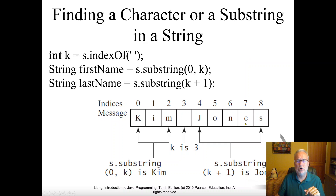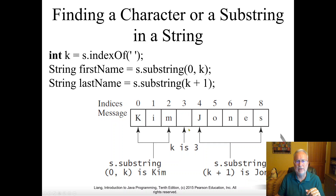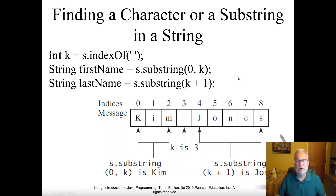Here's an example: you have the string 'Kim Jones' and want to split it. Using indexOf(' ') finds the space — it's at index 3, so k = 3. Then substring(0, k) gives you 'Kim' — indices 0, 1, 2. To get the last name, use substring(k + 1) which starts after the space and goes to the end, giving you 'Jones'. This lets you parse word by word through any space-delimited string. Pause the video and go through this in detail to understand how substrings work.